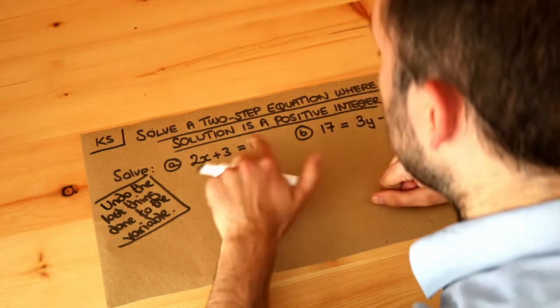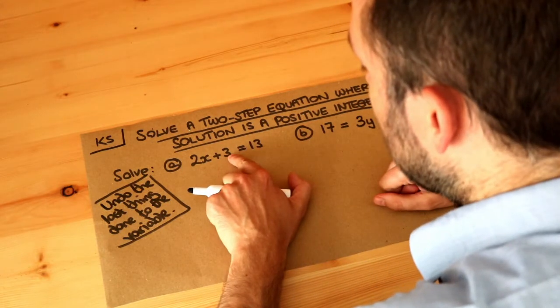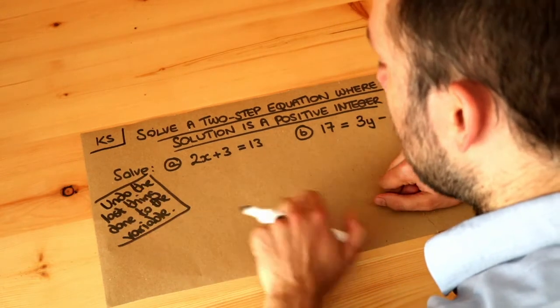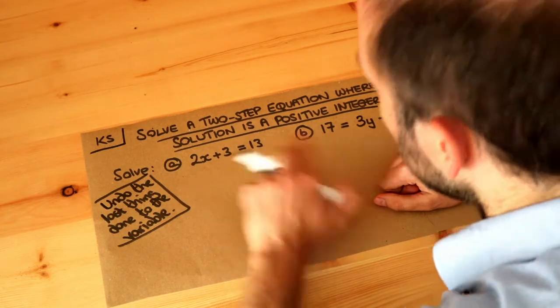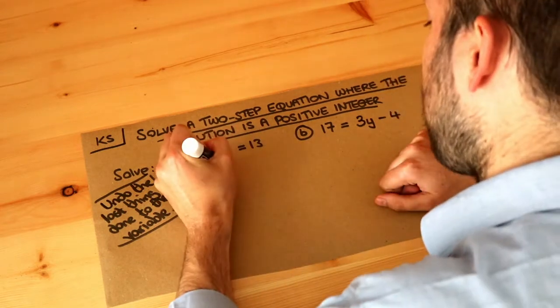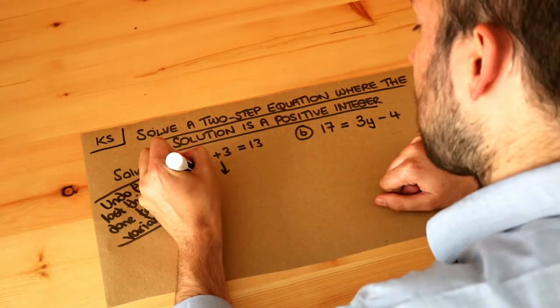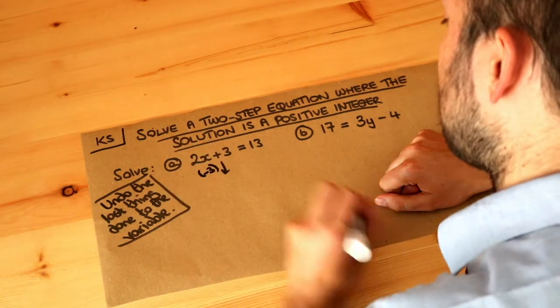And we want to retrace our steps. The last thing we did was to add 3, so we want to undo the last thing done to x. So we want to undo that add 3. So we've therefore got to do the opposite of add 3, which is subtracting 3. The opposite of adding is subtracting.